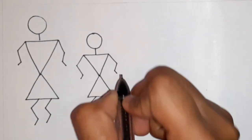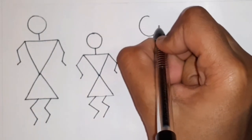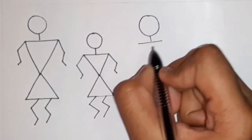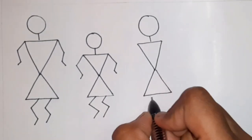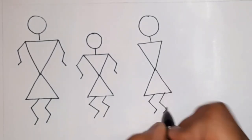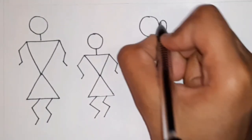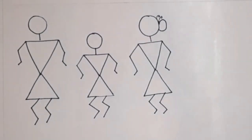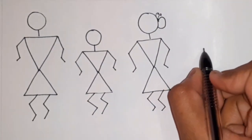For the woman we draw the same body structure but to differentiate her from the man we simply draw a bun. Now to draw the bun simply add a circular structure on the top of the head. Also add a few curved lines to show the hair ornaments.